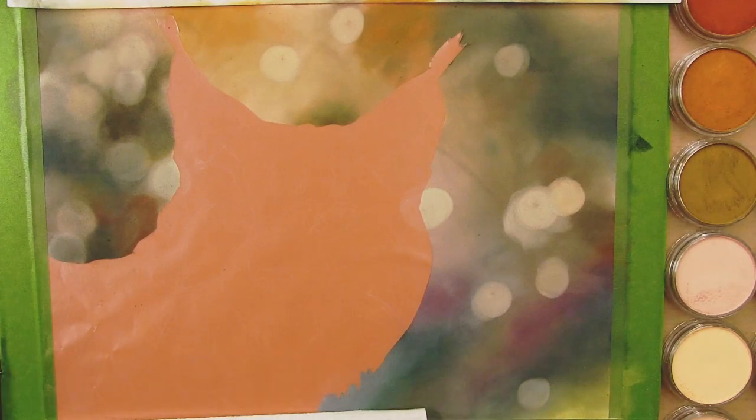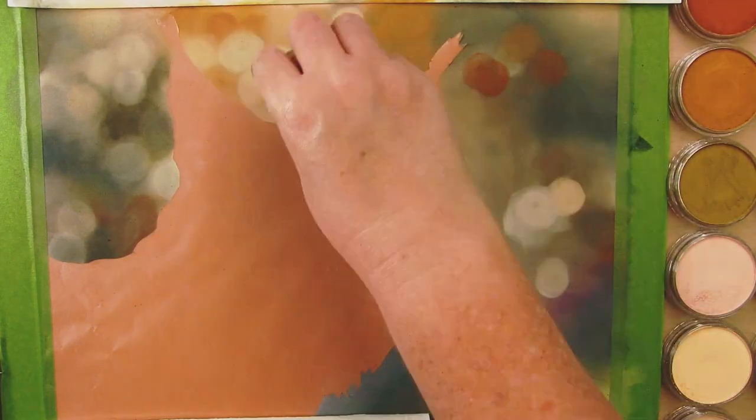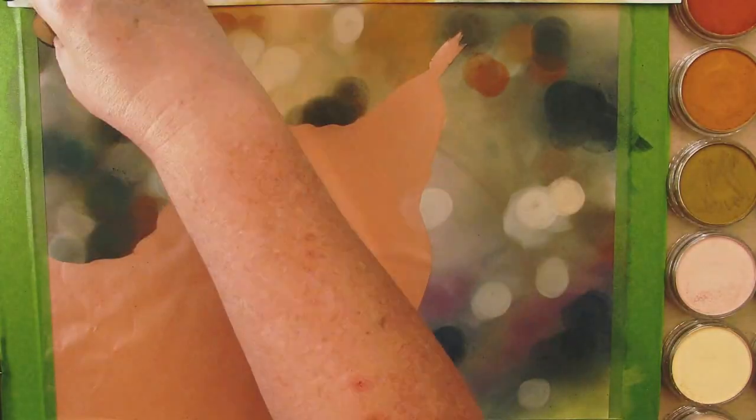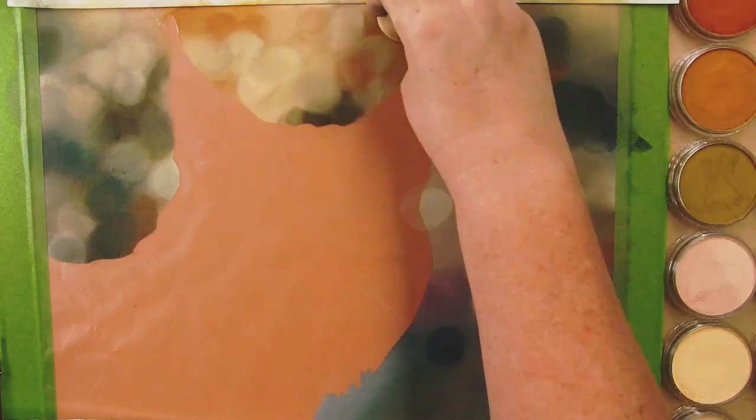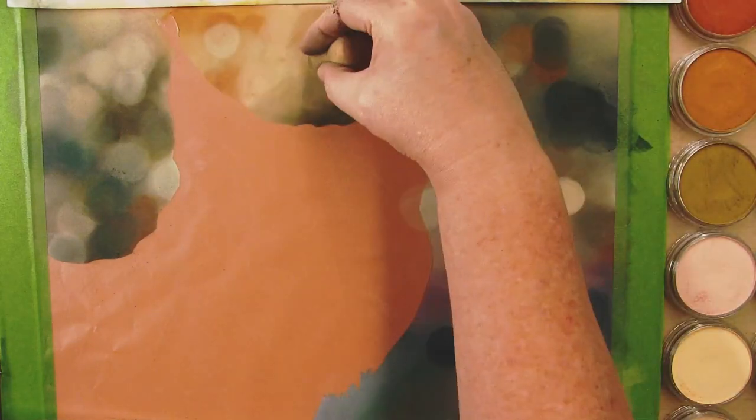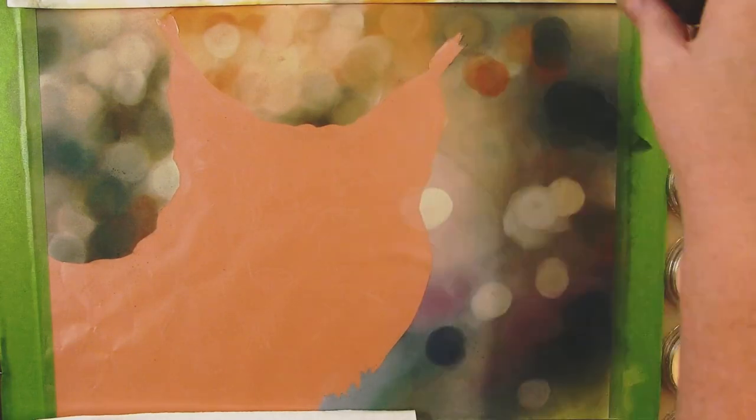I then put masking film over my subject to keep those areas free from pastel and give me a nice crisp edge to work with on the subject. After all of that was set I began on the background.